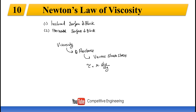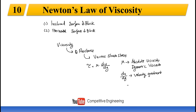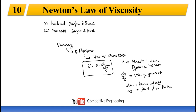The viscous shear stress is given by Newton's law of viscosity as tau equal to mu into du by dy, where tau is the shear stress, mu is the coefficient of viscosity or absolute viscosity or dynamic viscosity, and du by dy is the velocity gradient, where du is the linear velocity of the fluid film and dy is the fluid film thickness. Using this equation we can compute the shear stress, shear force, torque, and power loss.